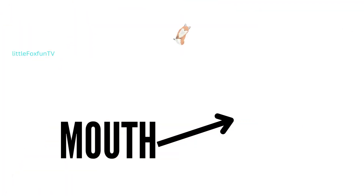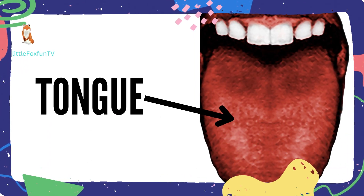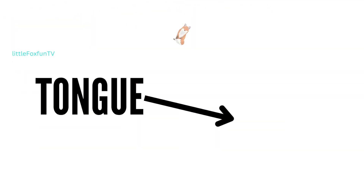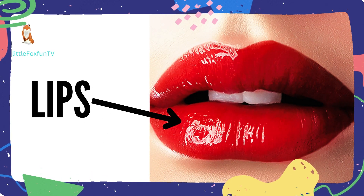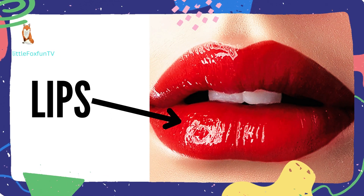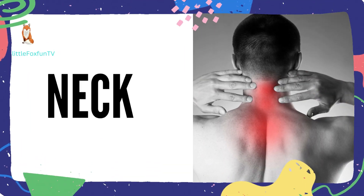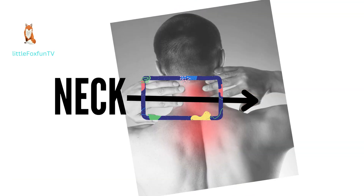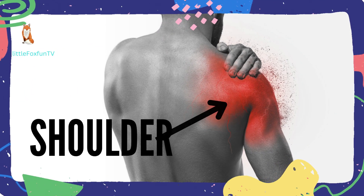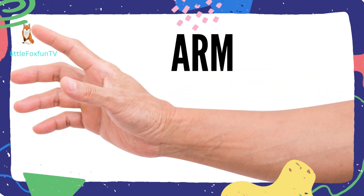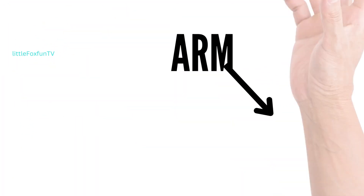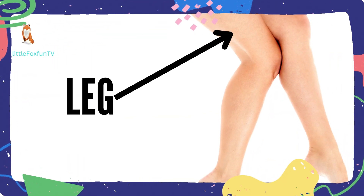Number 7: Tongue. Number 8: Lips. Number 9: Neck. Number 10: Shoulder. Number 11: Arm. Number 12: Leg.